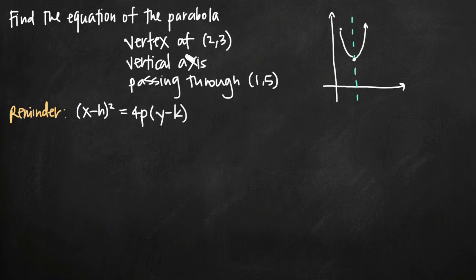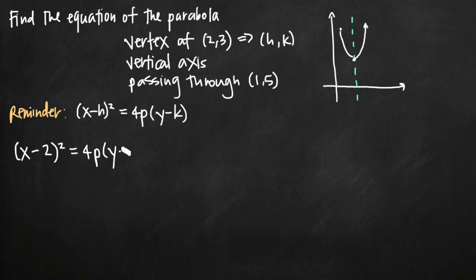Now we just need to plug in the information we've been given to solve for h, k, and p. Well in our case here, h and k come directly from the vertex. This vertex is in the form (h,k), so we can just plug in 2 for h, and we get (x-2)² = 4p times (y minus k), which is 3.